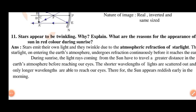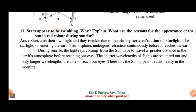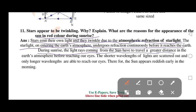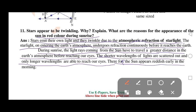Stars appear to be twinkling. Why? What are the reasons for the appearance of the sun in red colour during sunrise? Stars emit their own light and they twinkle due to the atmospheric refraction of starlight. The starlight, on entering the earth's atmosphere, undergoes refraction continuously before it reaches the earth. During sunrise, the light rays coming from the sun have to travel a greater distance in the earth's atmosphere before reaching our eyes. The shorter wavelengths of light are scattered out and only longer wavelengths are able to reach our eyes. Therefore, the sun appears reddish early in the morning.